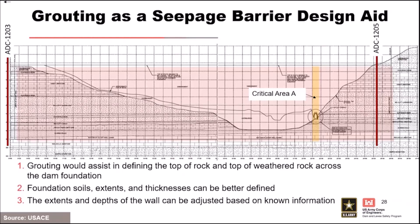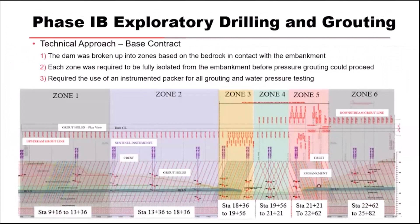With a high degree of uncertainty, the original seepage barrier assumed a rectangular wall, and the thought was: if we come in and do a full grout line and have a better understanding of the grout takes and water pressure testing, we may be able to optimize the limits and depths of the wall to most effectively treat the critical areas. The key thing to note is that the purpose of the drilling and grouting was for slurry control — to treat the karst in advance of the seepage barrier construction. You can have rapid slurry or concrete losses when installing these. If you have karstic voids in the foundation, you want a better understanding of where these conditions exist and how they may impact the phase two design.